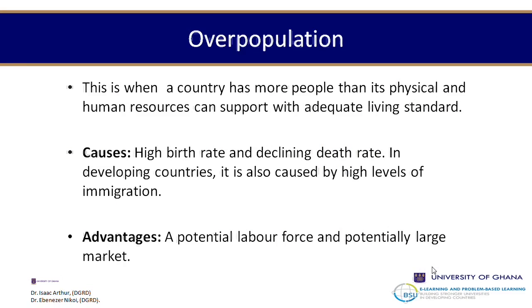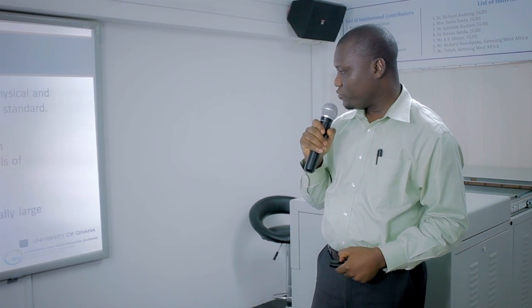There are some advantages of overpopulation. You can have a cheap labor force — a lot of the reason why companies in the United States headed to China to put up manufacturing plants is because of the size of their population and the fact that they can get very cheap labor. There is also the issue of potential markets — these people would have to eat, live in their homes, send their children to school, buy clothes — so they become a potential market. If the population is adequately resourced, they can become a very big market for the supply of goods and services.